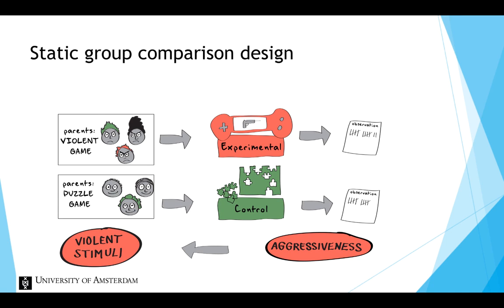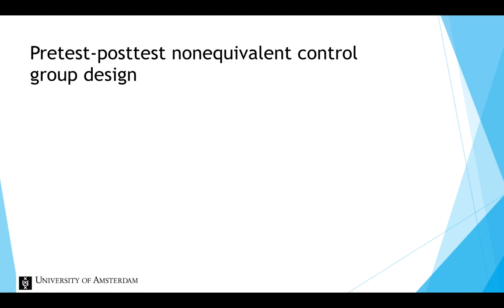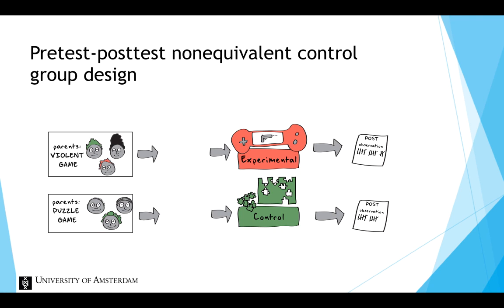This problem could be fixed by extending the design to a pre-test post-test non-equivalent control group design, by simply adding a pre-test. With this design we are able to determine whether there were any pre-existing differences on the dependent variable. If we can show that such differences don't exist, we have firmly disambiguated the causal order.